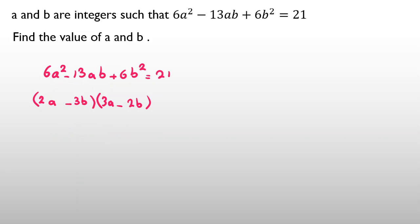So the factorization (2a minus 3b)(3a minus 2b) equals 21 is useful in other problems and exams. Since a and b are integers, we list the integer factor pairs of 21: (1, 21), (negative 1, negative 21), (3, 7), (negative 3, negative 7), (7, 3), (negative 7, negative 3), (21, 1), and (negative 21, negative 1).